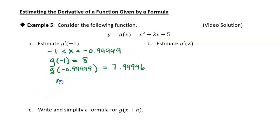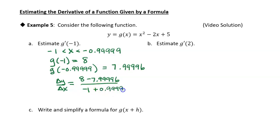Now I can find delta y over delta x — the average rate of change over this very small interval. I take eight minus 7.99996, divided by negative one minus negative 0.99999. Be careful to use the same number of decimal places and don't round off. When I put that into my calculator, it turns out to be very, very close to negative 4. So that's a pretty good estimate for the derivative at negative one.